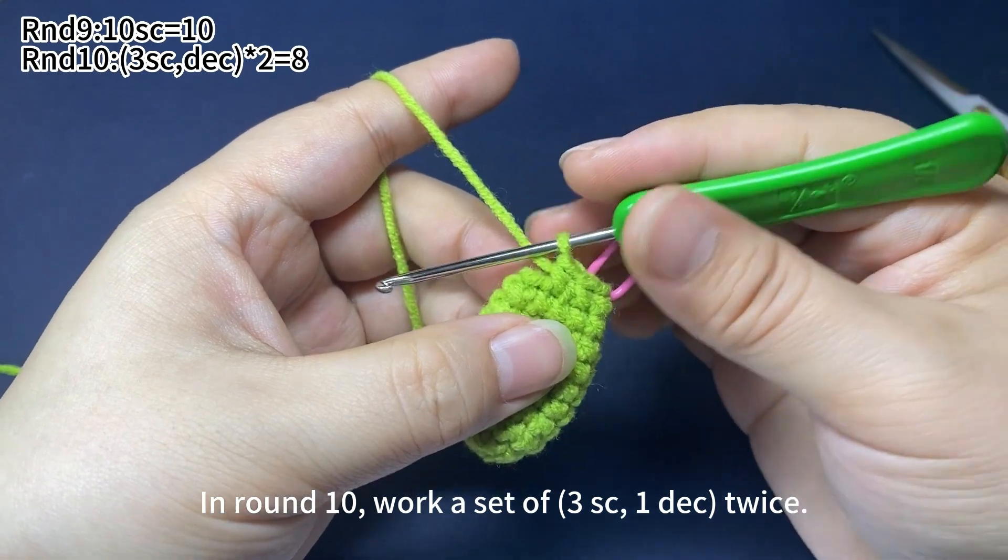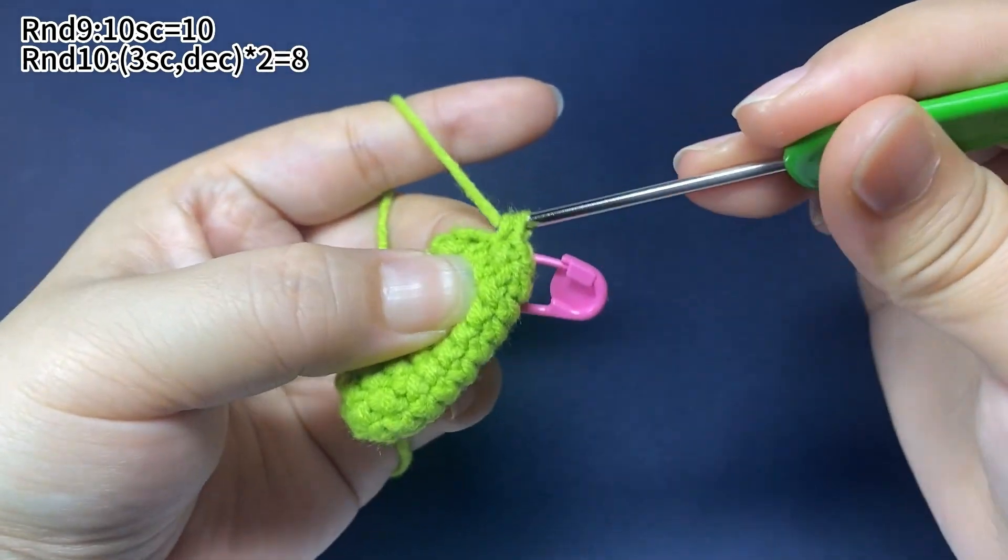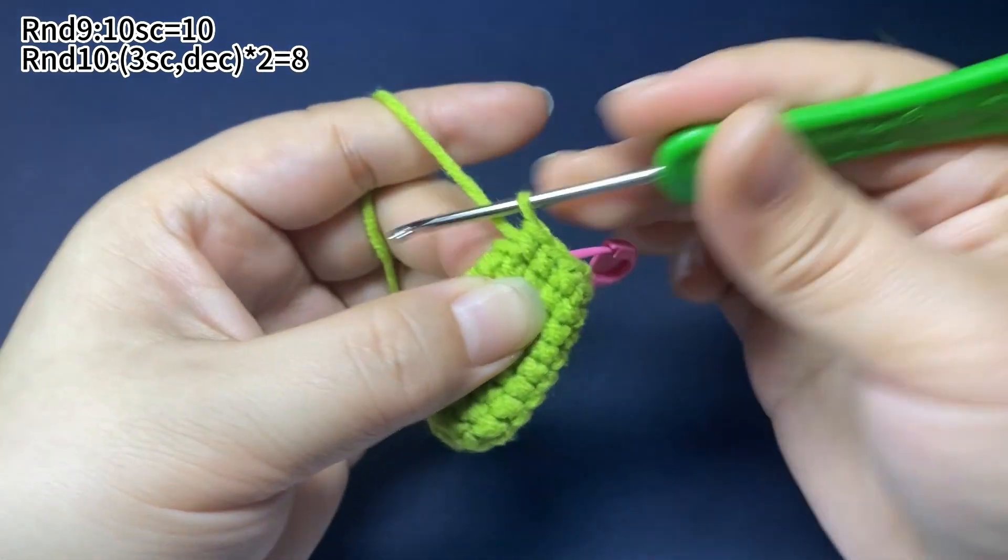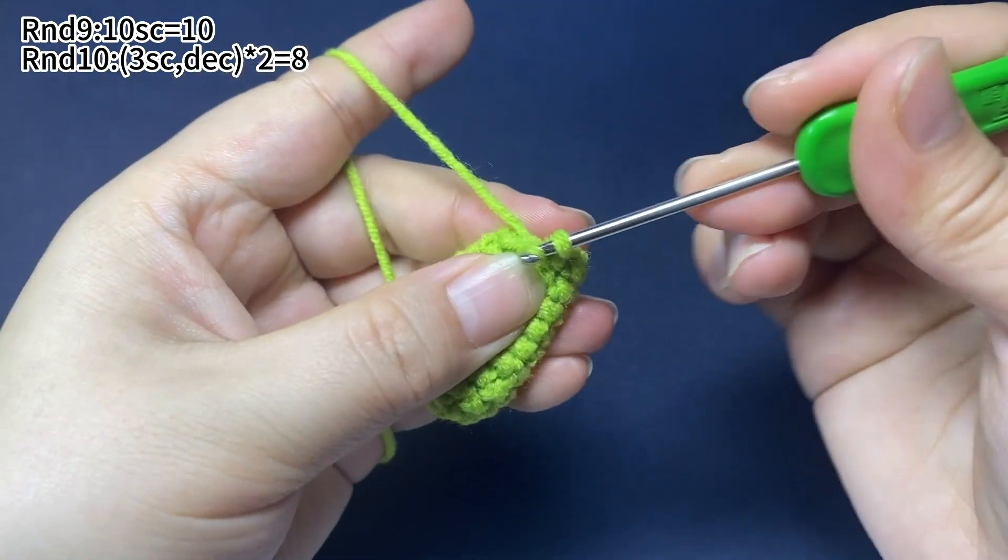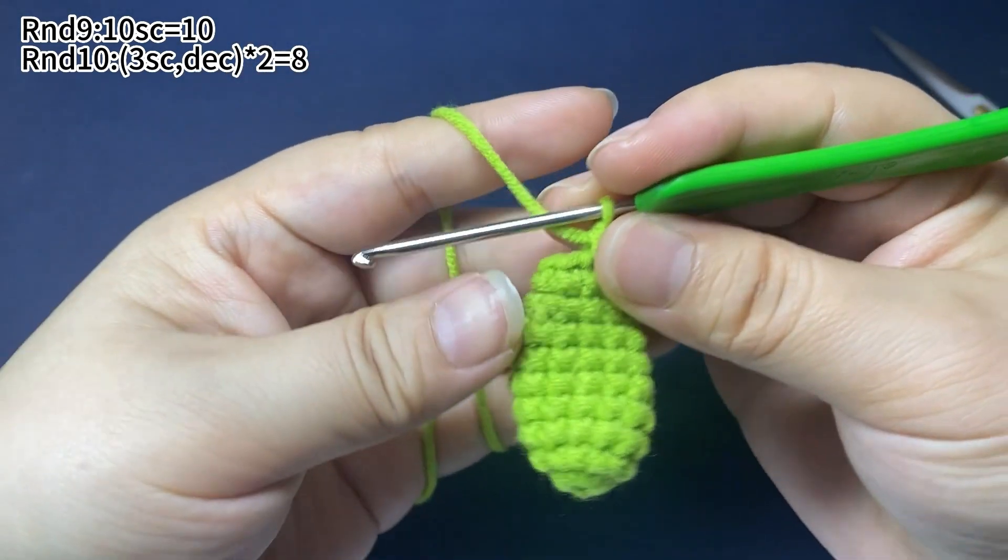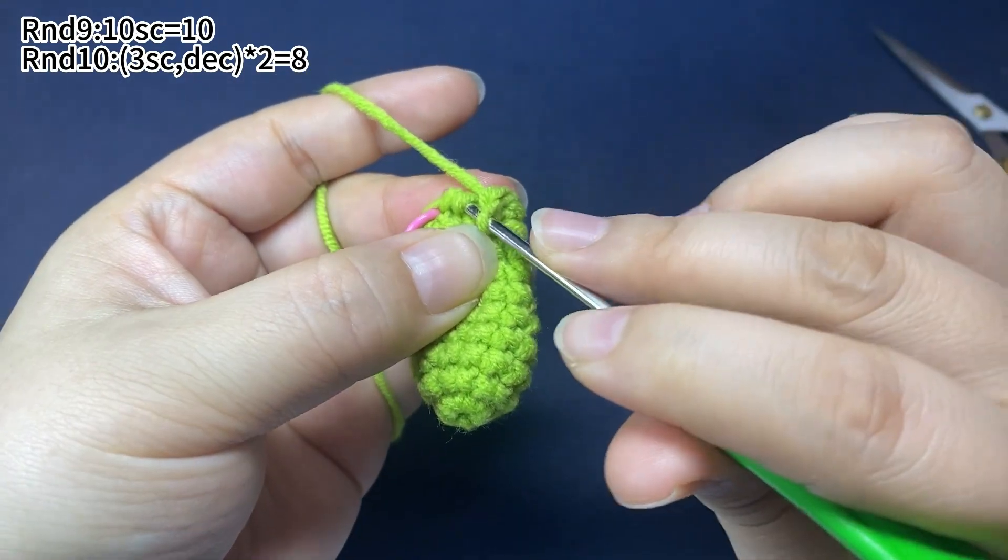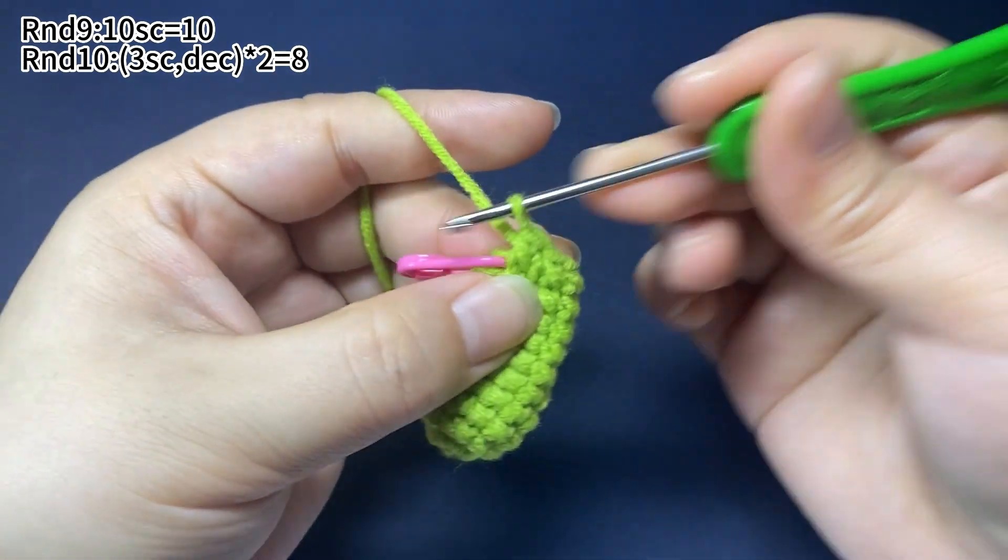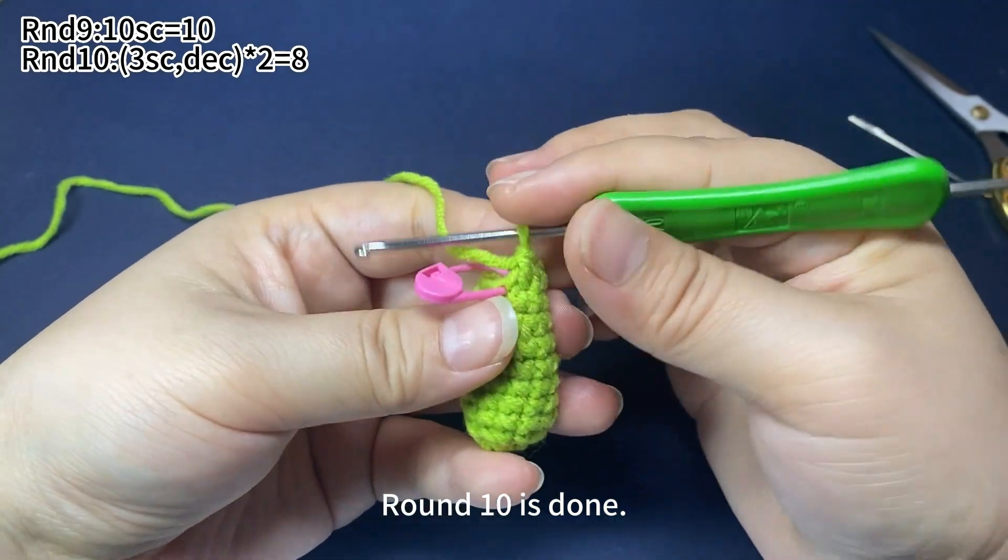That's 1 decrease. Then repeat: 3 single crochets, then 1 decrease. Round 10 is finished. Now stretch the loop.